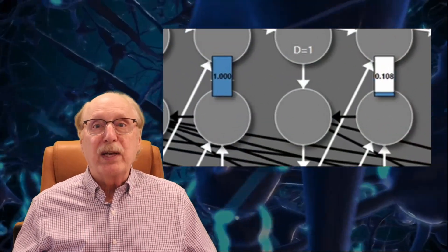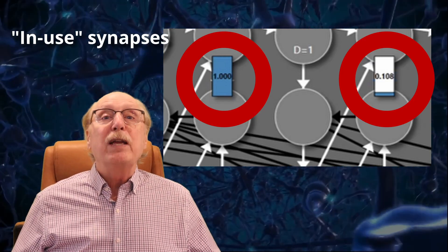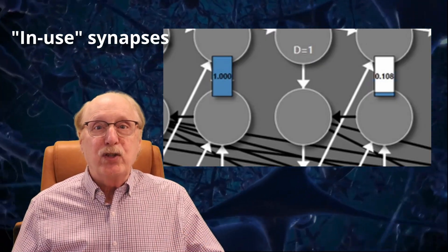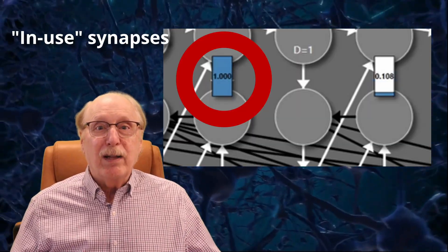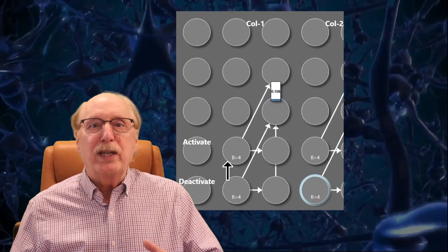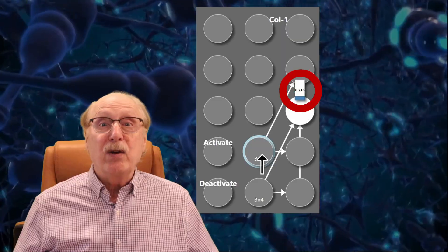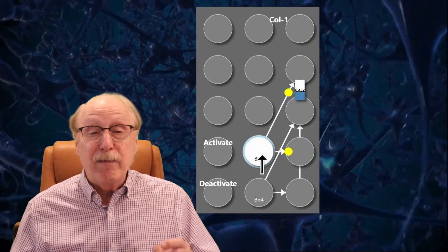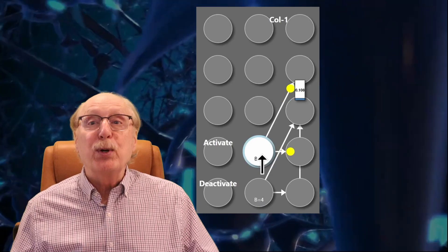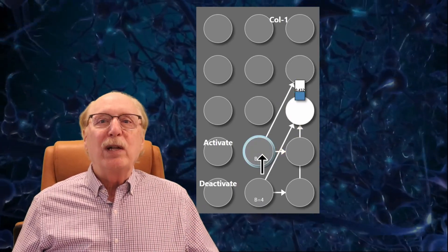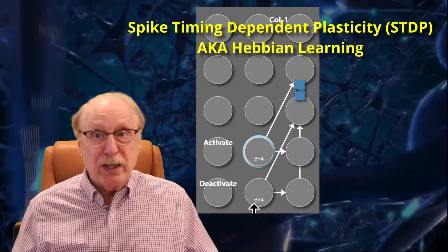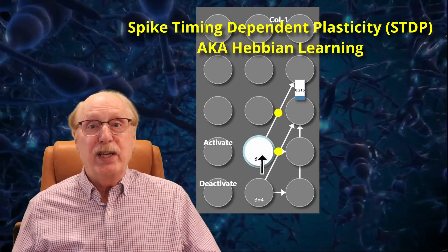The key to making this work is something I call the in-use synapse, which keeps track of whether a column is already busy. If this synapse has a weight near zero, the column is available. If it is near one, the column is in use. Let's simplify things for a moment and focus just on this one synapse, which will strengthen or weaken depending on the timing relationship of spikes arriving at either end. We introduce the activate neuron, which fires a burst of four spikes. Thanks to well-timed connections at both ends of the synapse, those spikes apply Hebbian learning rules to set the weight to one, marking the column as in use.